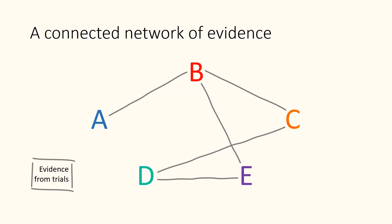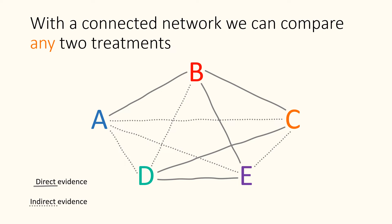Suppose we have direct trial evidence comparing the treatments connected by solid lines. So here there is an A versus B trial, a B versus C trial, and so on. Network meta-analysis can be used to compare any pair of treatments, so long as we can follow a path of solid lines between them. Although there is no direct evidence comparing A and C, they are connected by the A versus B trial and the B versus C trial, so we can obtain an indirect estimate based on trial evidence.